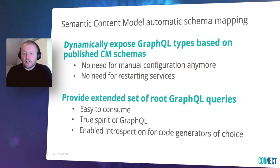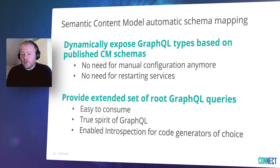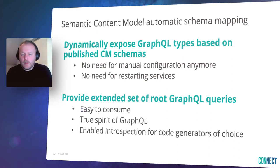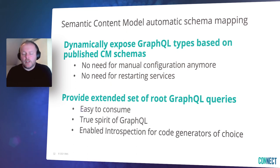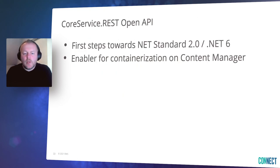Rather than using Tridion-specific item types such as a page or component, content models allow you to use that in the GraphQL content API to build experiences. This removes the need for application developers to know Tridion or its domain model. In 9.6, we will expand that capability by automatically mapping schemas defined to content models representing the content in the GraphQL API. This removes the need for manual configuration and restarting services. To make this more usable for application developers, there will be an extended set of root GraphQL queries available. With 9.6, we will have an initial release of the core service REST open API, which has been a long-standing request in our community ideas.